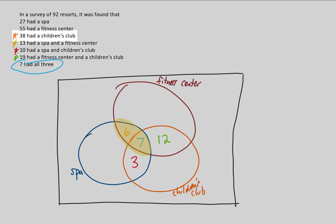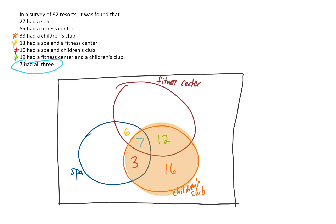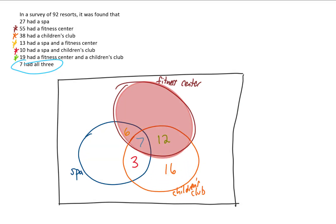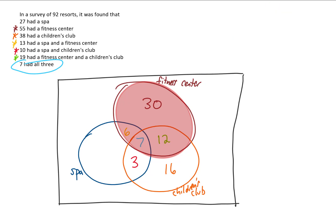Continuing outward, 38 resorts had a children's club. We already have 3 plus 7 plus 12 equals 22 resorts in that circle, so 38 minus 22 leaves 16 resorts that only have a children's club. Next, 55 resorts have a fitness center. We already have 6 plus 7 plus 12 equals 25 in that circle, so that means 30 more resorts only have a fitness center.